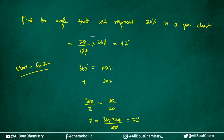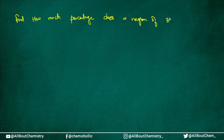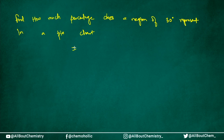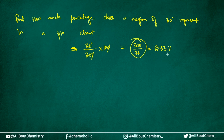Now let's say the question is the other way round — you are given an angle and they ask how much percentage it is. For example: find how much percentage does a region of 30 degrees represent in a pie chart. Using the formula, take the angle 30 degrees divided by 360 times 100. This gives 300 over 36, which equals approximately 8.33 percent. So 30 degrees of a pie chart represents approximately 8.33 percent.